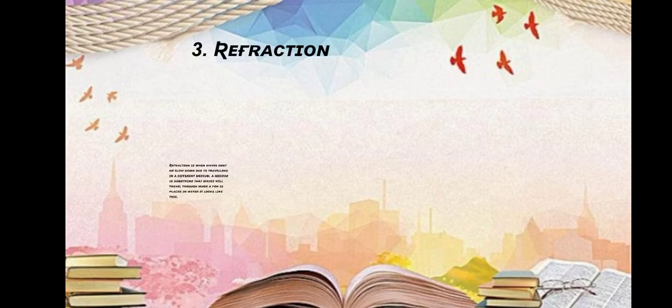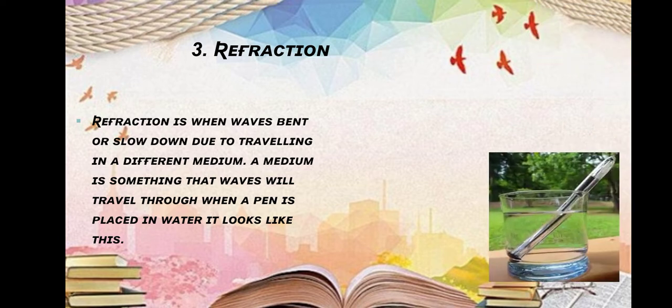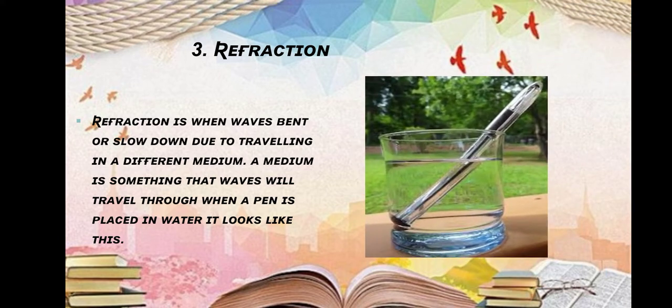Now let us talk about refraction. Refraction is when waves bend or slow down due to travelling in a different medium. A medium is something that waves travel through. When a pan is placed in water, it looks like this — you can see in the diagram that the pan seems to be bent.